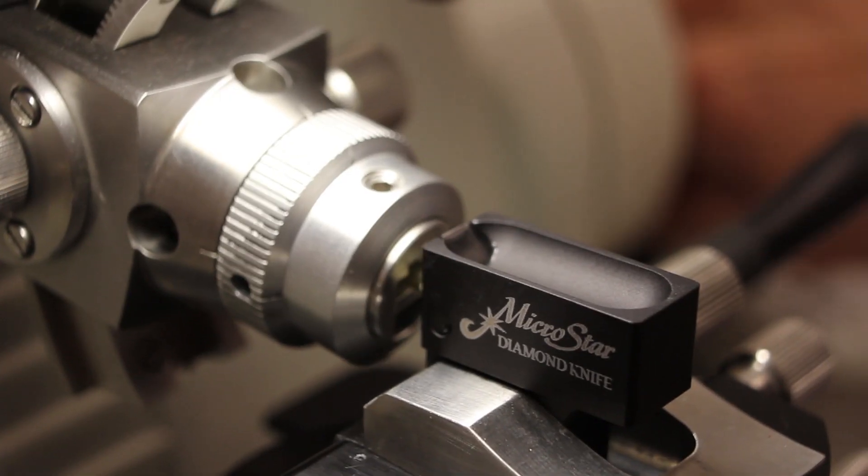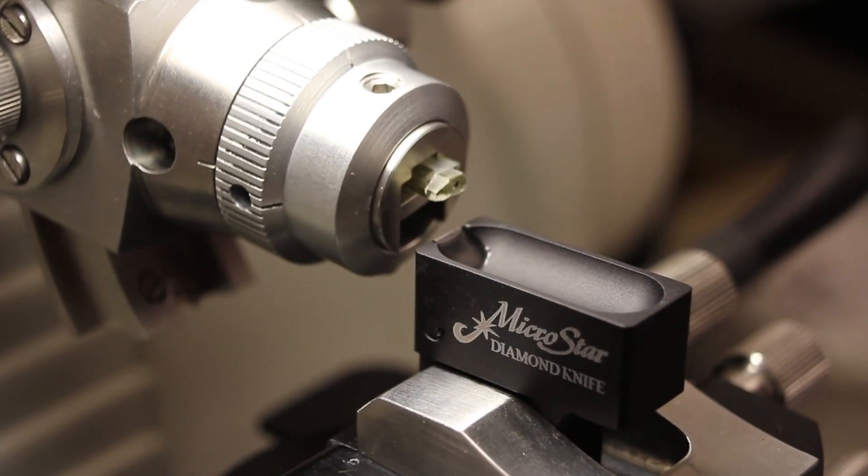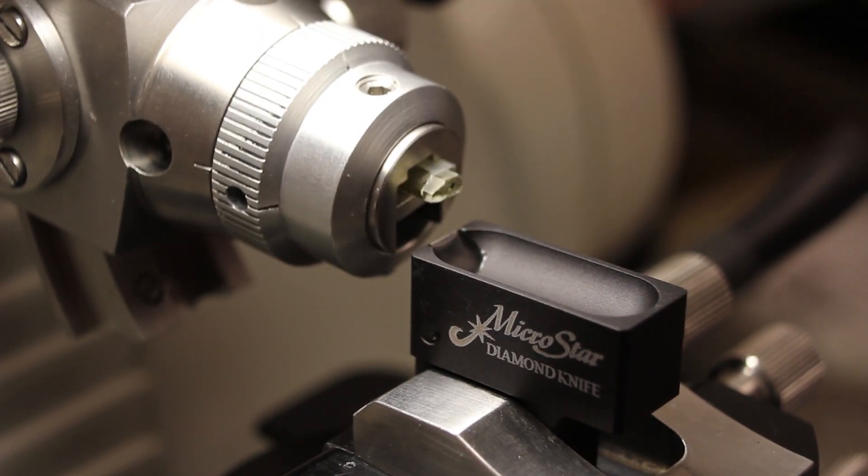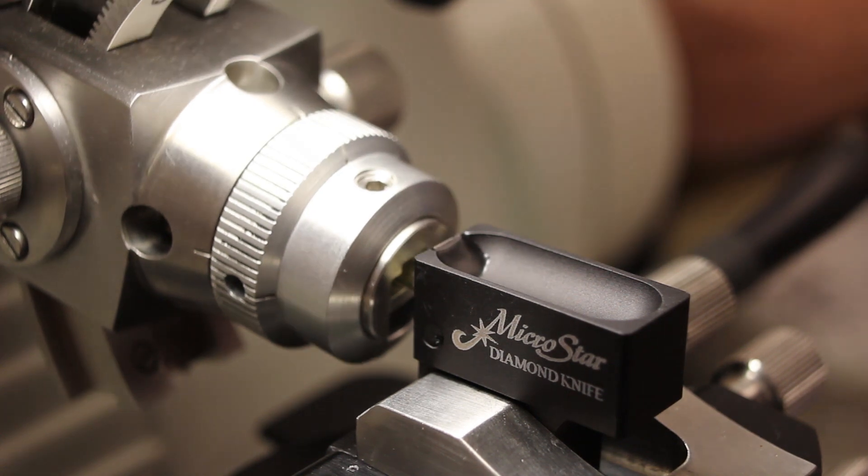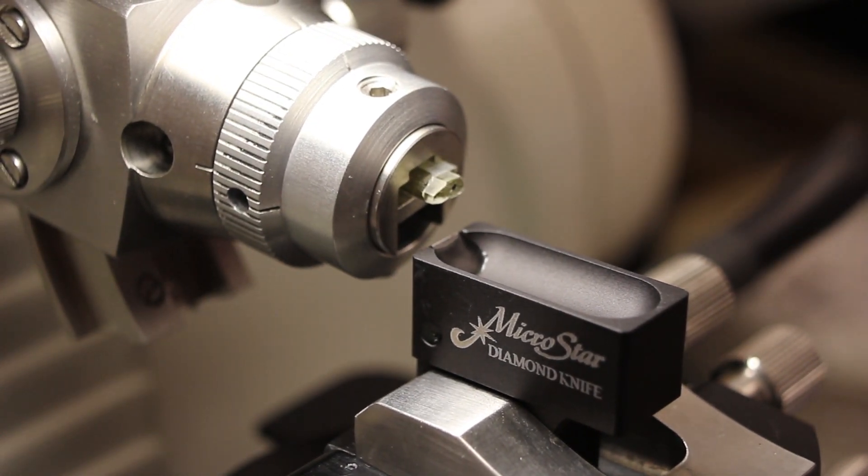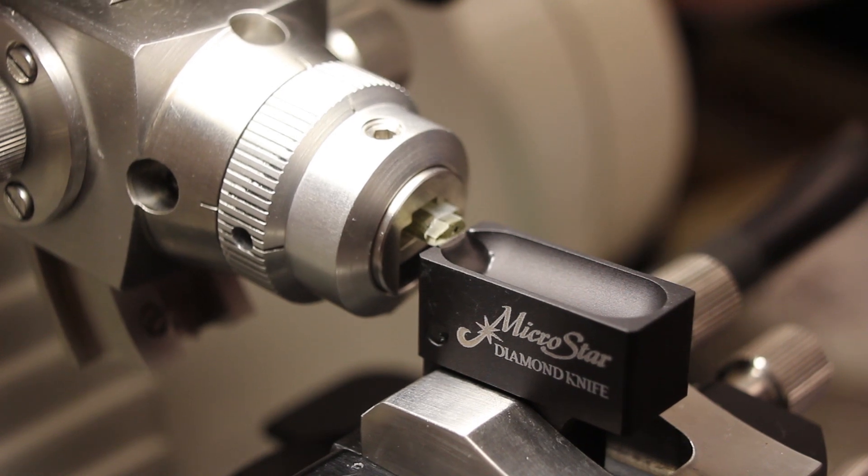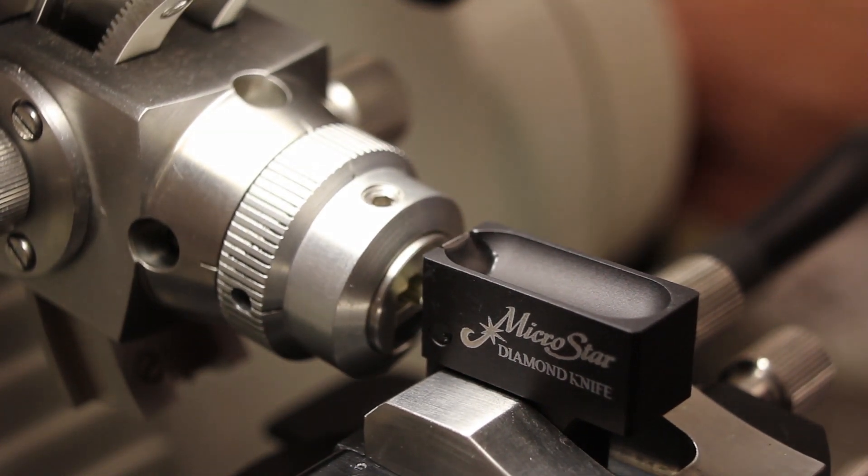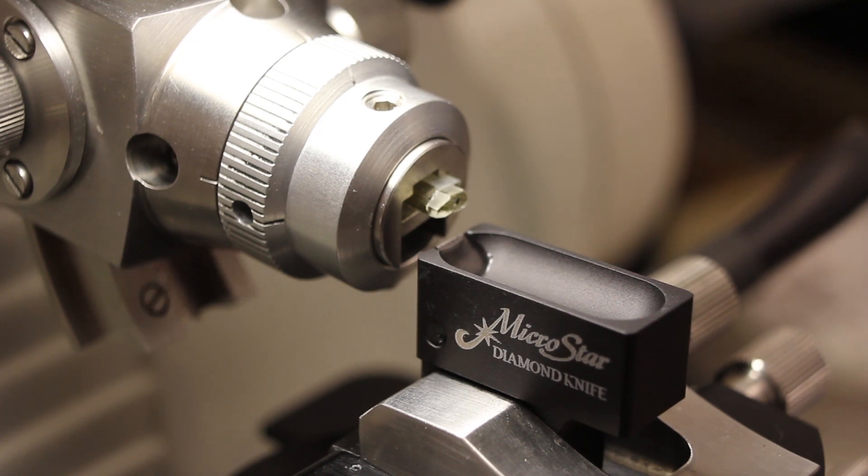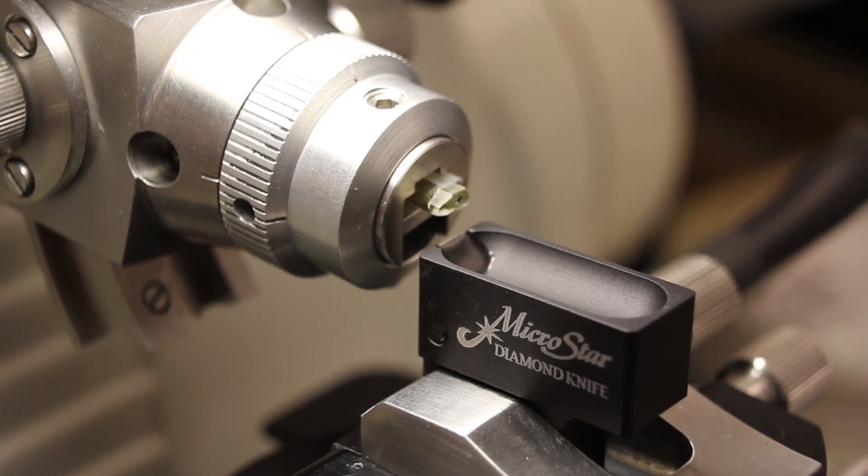So how does it work? The sample is in that plastic block. And it passes the knife. Retracts, comes up above, moves forward 70 nanometers, and comes back down. Just slice off a section. How do you get the sample onto a slide? I use water.